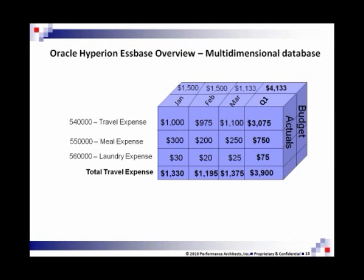I've got $3,900 of actual travel expenses and $4,133 of budgeted travel expenses for the first quarter. Still don't have everything I need to really answer the question — this doesn't tell me for my organization what I'm looking at. So if we add a final piece to this puzzle, now I can answer any question about this subset of data. My sales department, 2010, first quarter, total travel expenses: actual expenses $3,900, budgeted expenses $4,133.